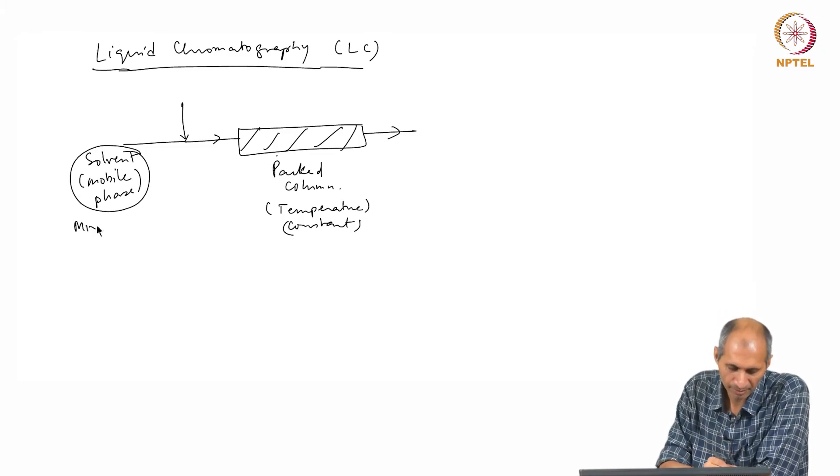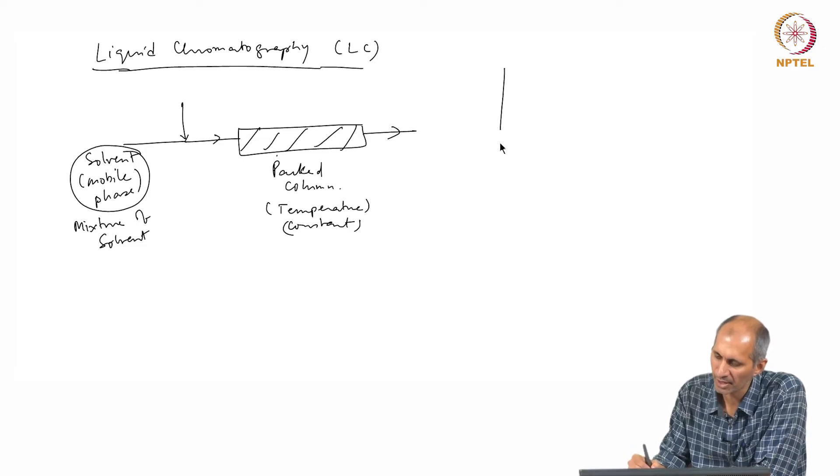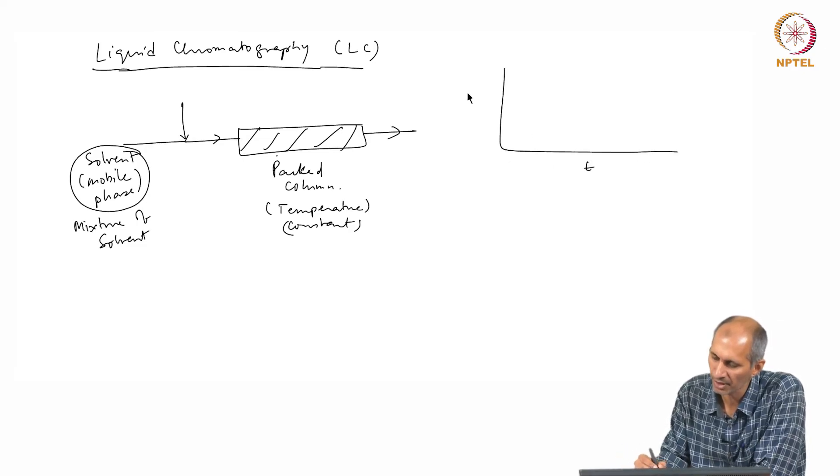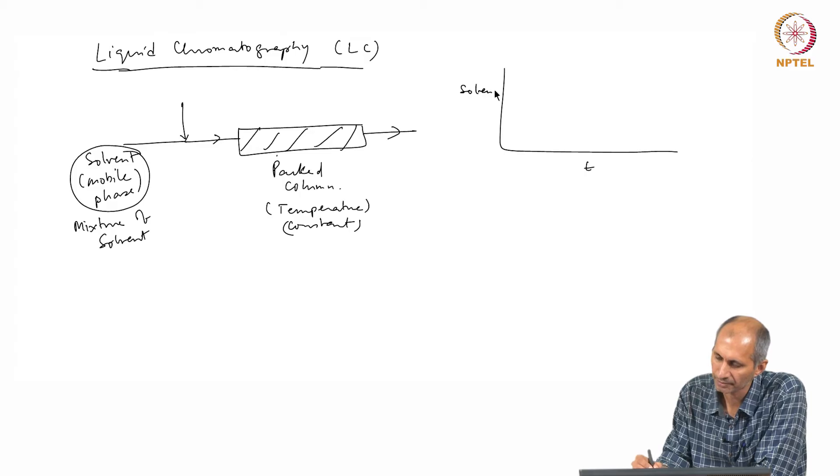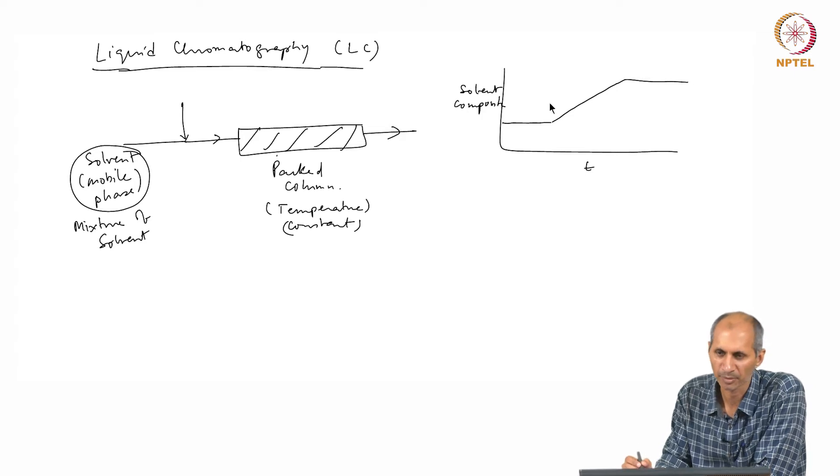What you can change is the solvent. Carrier gas you cannot change in gas chromatography, but here you can change the solvent because you are pumping and you have freedom to change the solvent. You can mix mixture of solvent. Where in the GC you can do temperature programming, here I can do solvent composition. I can change the solvent, I can start solvent composition at one and then I can increase it dynamically, this is possible.